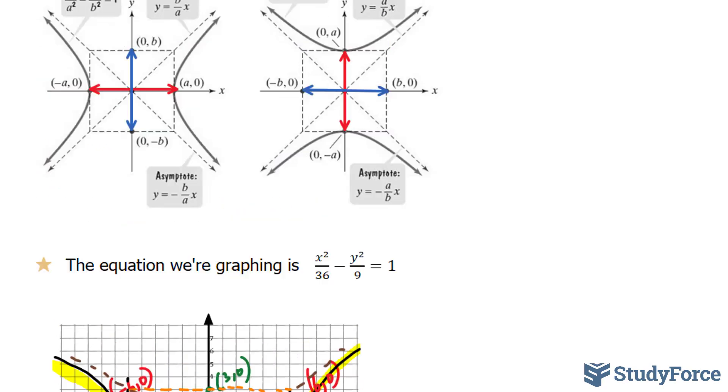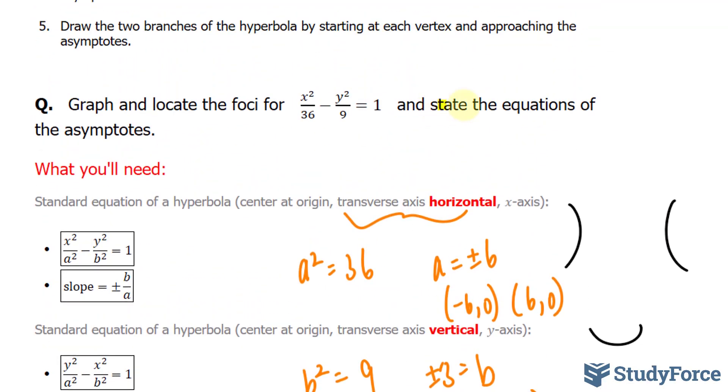Now also the question asks us to state the equations of the asymptotes. And to do that, we have to find the slope.